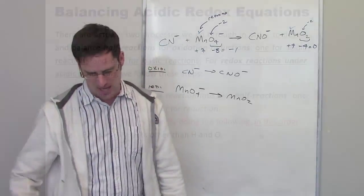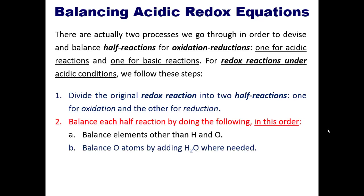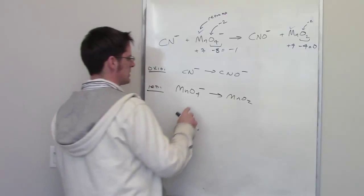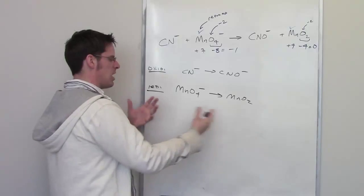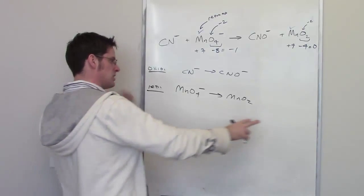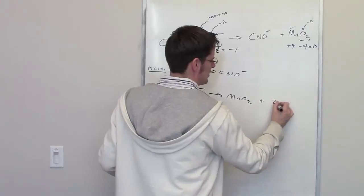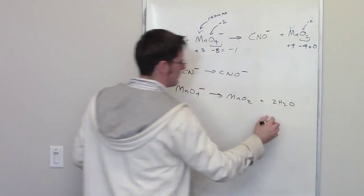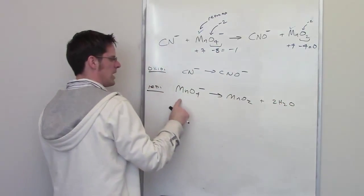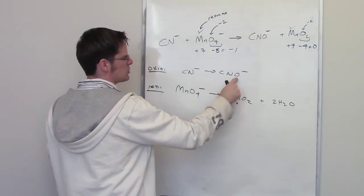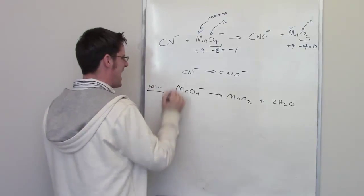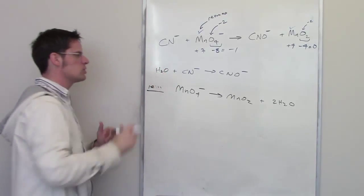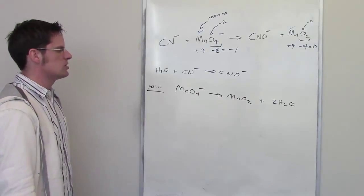The next step says balance oxygen atoms by adding H₂O where needed. In the reduction half-reaction, I've got four oxygen atoms on the left and two on the right, so I add two molecules of water to the right — now four oxygens on each side. In the oxidation half-reaction, I have one oxygen on the right and none on the left, so I add one molecule of water to the left. Now oxygens are balanced.